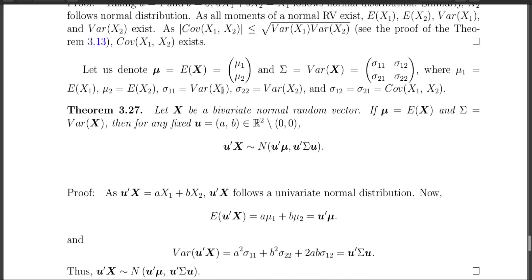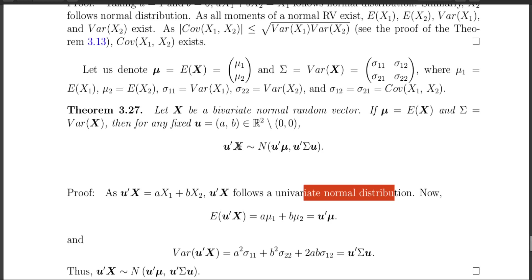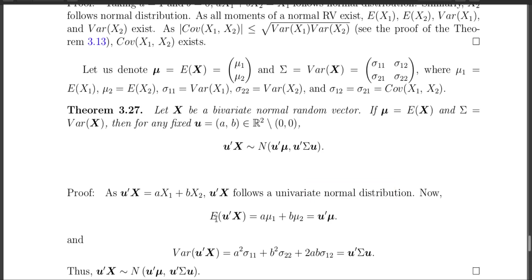The proof is simple. By definition of the bivariate normal random variable, u'X has a univariate normal distribution. Since a univariate normal is completely specified by its mean and variance, I need to find the expectation and variance of u'X. The expectation of u'X equals a·E[X1] plus b·E[X2], which is u'mu.